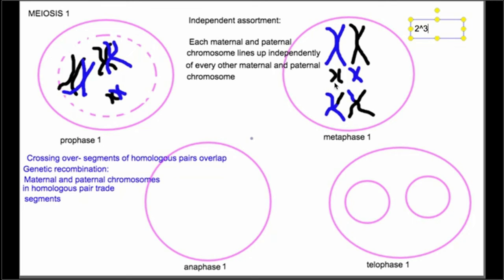So two to the 23rd is more than eight million unique sex cells. That means that even if none of my cells ever underwent genetic recombination in prophase I, I would be capable of producing more than eight million genetically unique eggs. I would probably never make two eggs that were identical — it would be extremely unlikely.